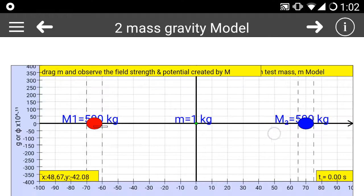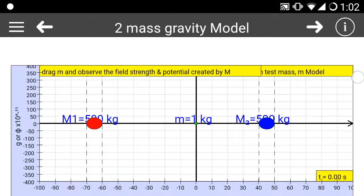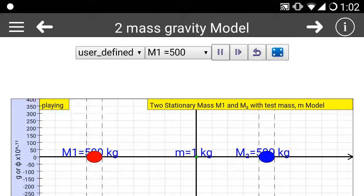You can click play to see what happens to the test mass, which is shown as the green mass, which will slowly gravitate towards either M1 or M2 depending on the physics involved in this particular setup.